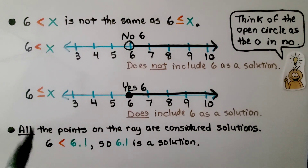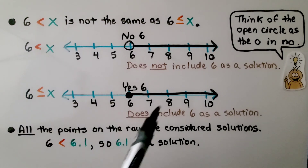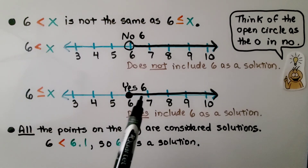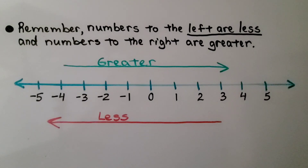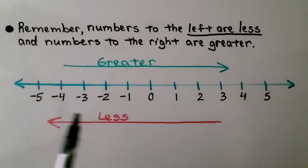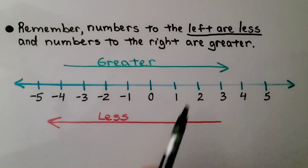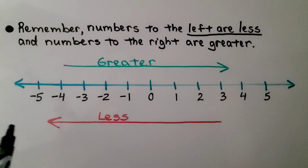The solution to these inequalities is not just the whole numbers — it's all the tiny little increments between the whole numbers also. Remember, numbers to the left are less. The values go less as we go left, and they both start with 'l' — maybe that will help you remember it. Left is less, and the greater values are going towards the right.